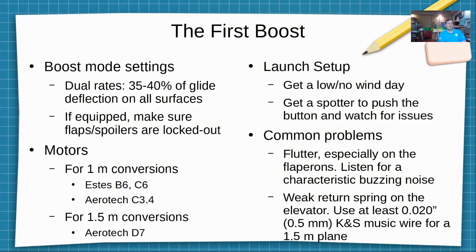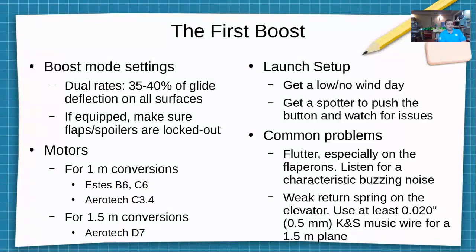For boost mode settings, from a standard F3K setup, dual rates of 35 to 40 percent on rudder, elevator, and ailerons is more than adequate for a rocket boost. Make sure any flaps or spoilers are locked out — you do not want to deploy flaps at 100 miles an hour under rocket boost. For motors on a one-meter conversion: a B6 or C6 Estes is a good starting point, or the AeroTech C3.4. If your glider is around 100 grams go with B6; around 150 grams, C6. For a 1.5 meter conversion, your best option is the AeroTech D7, which is the half-length E6.